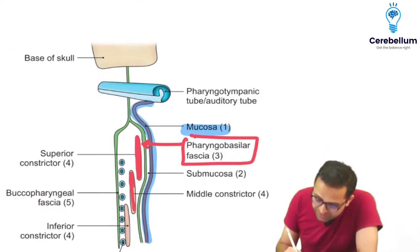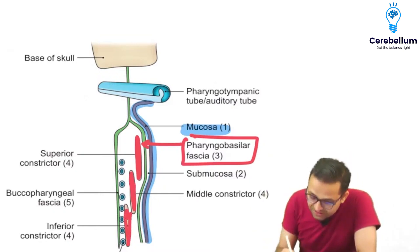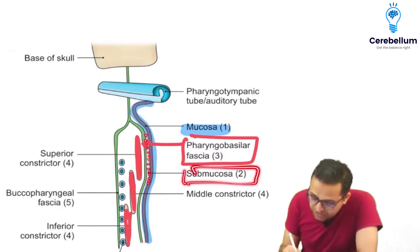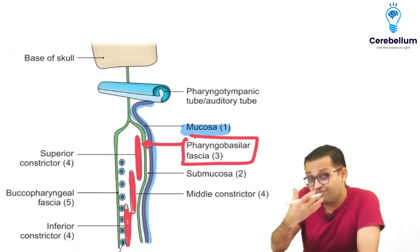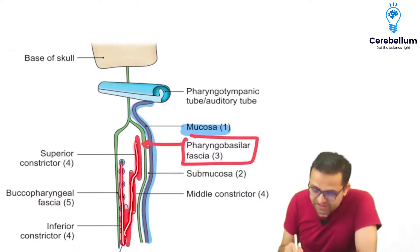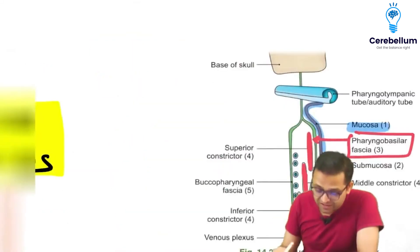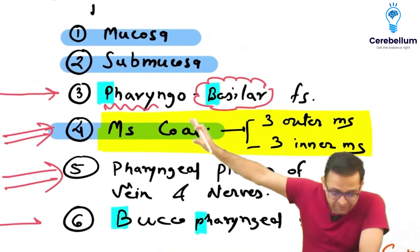You can see the superior constrictor, middle constrictor, and inferior constrictor muscles — I will teach you those in detail. So the layers are: first, mucosa; second, submucosa; third, the pharyngobasilar fascia (PB fascia); then the muscles and blood vessels; and finally, outermost, the buccopharyngeal fascia (BP fascia). You can remember all these layers using this flowchart.